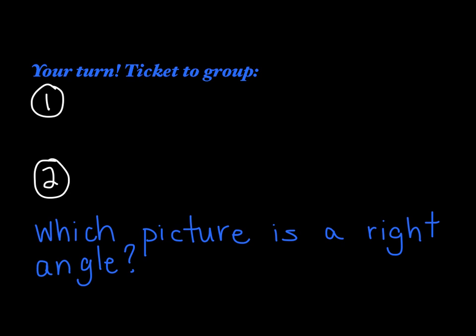Now your ticket to group today is going to be just a little bit different because I'm not going to have you actually work out a problem. You're going to look at the two pictures that I'm going to draw for number one and number two, and you need to tell me which picture is a right angle. Are you ready? Here we go. So all you need to write down in your notes is a one or a two and make it a sentence. So like write down number one is a right angle, or write down number two is a right angle. Simple enough? Good.